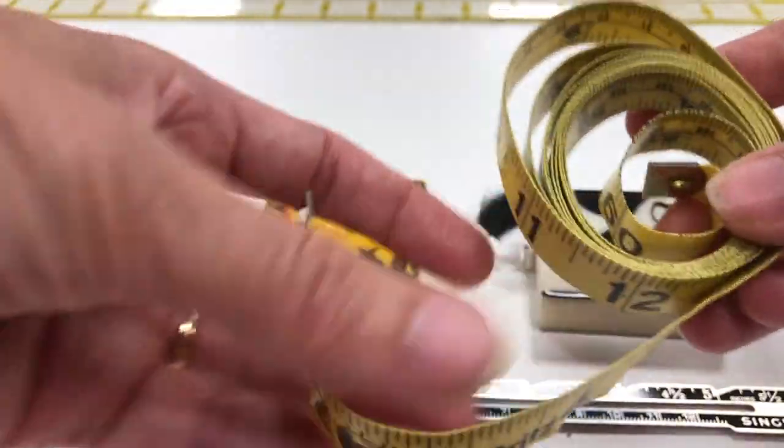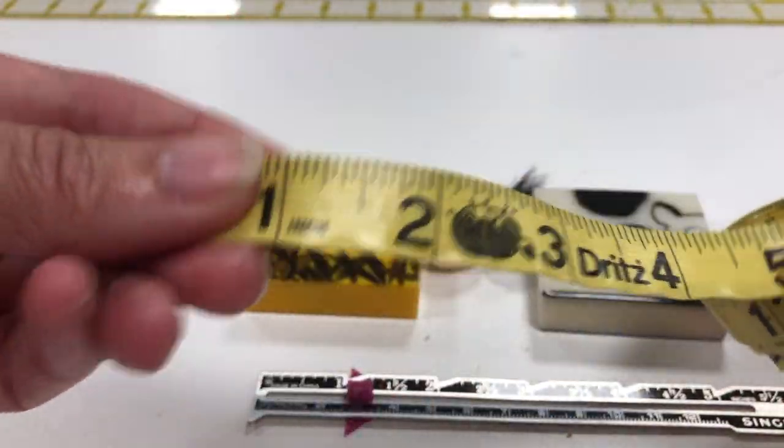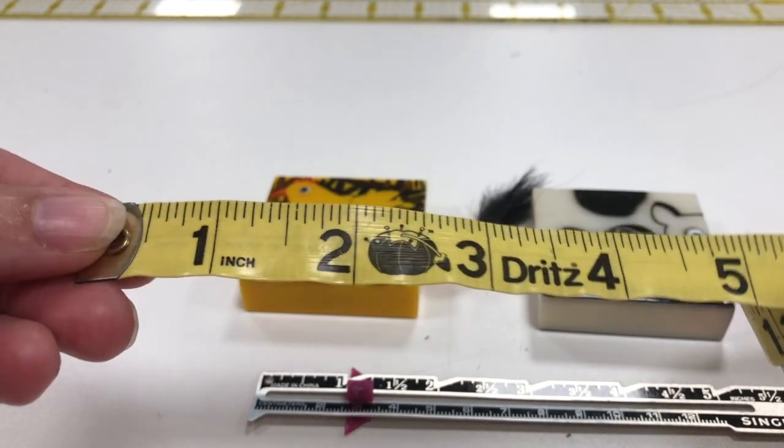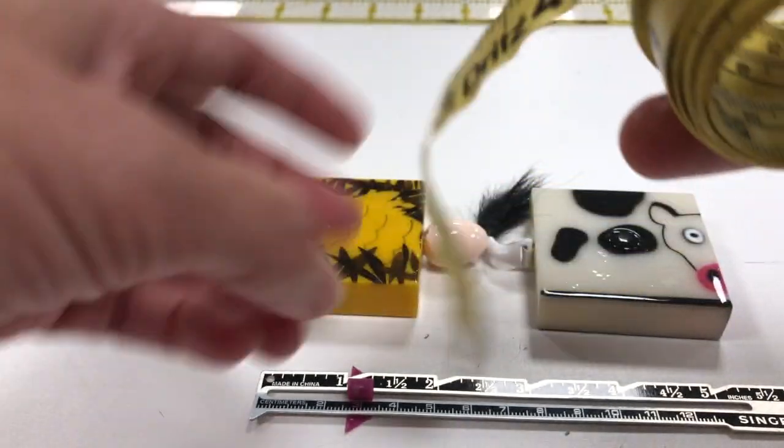You can also measure a lot of other things but the main reason why it is soft and pliable is for the body, to wrap it around the body.